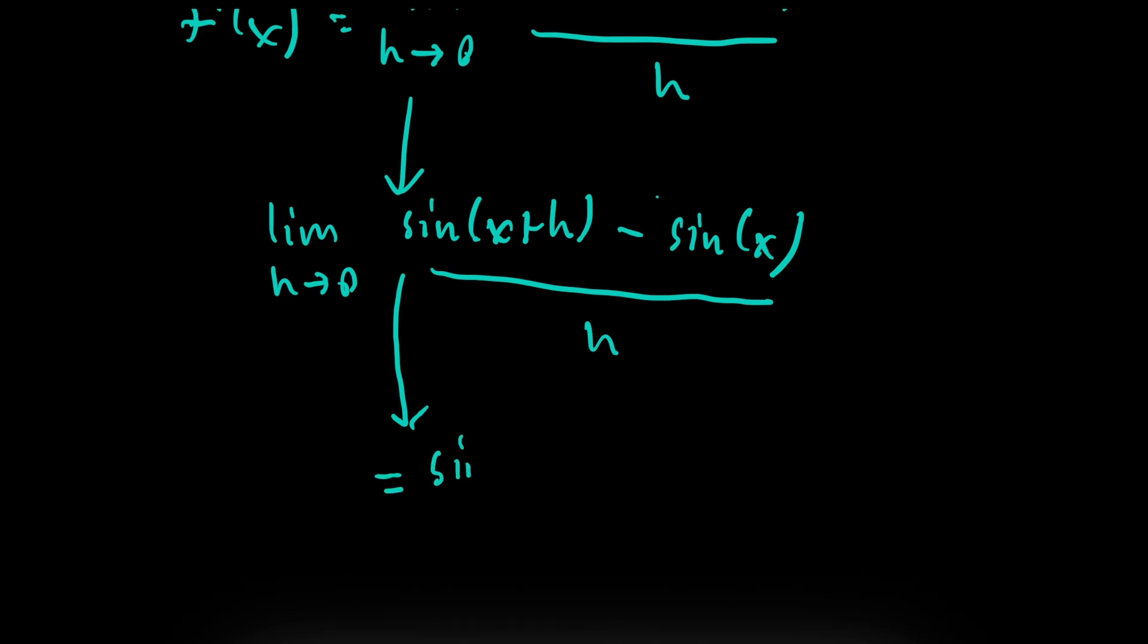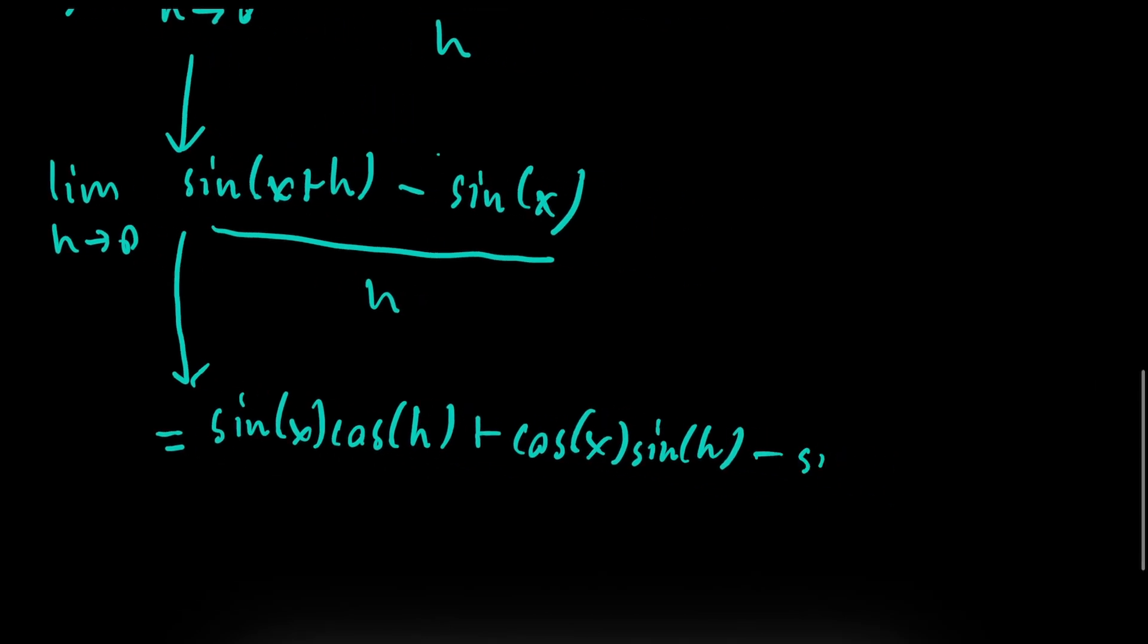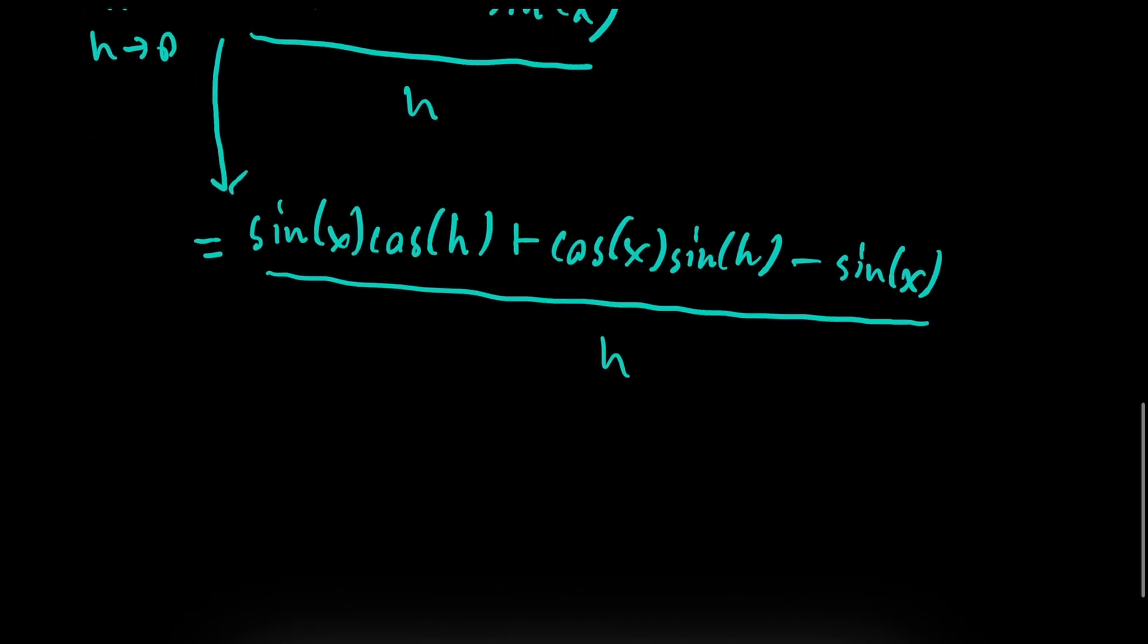Which would give us sine of x times cosine of h plus cosine of x times sine of h. Minus sine of x, don't forget about that. All of this over h, which we can again rearrange to sine of x times cosine of h minus 1, all of this over h.